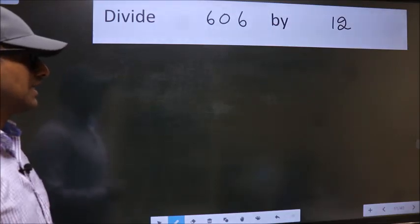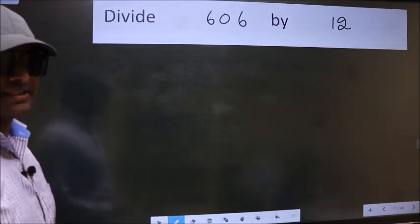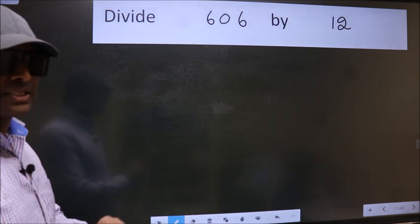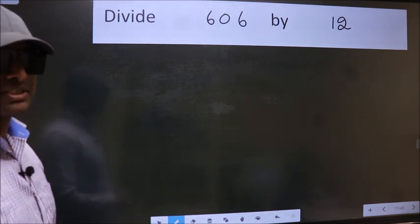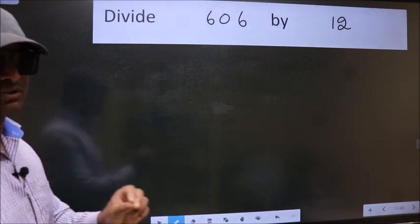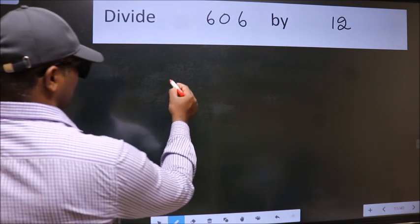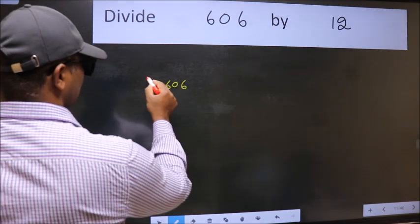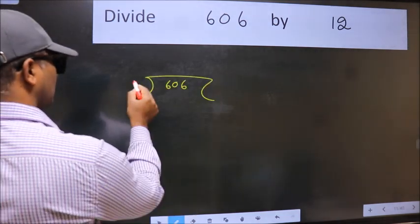Divide 606 by 12. While doing this division, many do this mistake. What is the mistake that they do? I will let you know. But before that, we should frame it in this way. 606 here, 12 here.